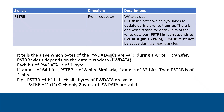The PSTRB signal is also generated from the requester. It gets active during write transfers only, not during read transfers. PSTRB indicates which byte lanes to update during a write transfer — it tells the slave which bytes of the write data are valid. The PSTRB signal width depends on the write data width: for every 8 bits of write data, there is 1 bit of PSTRB. So if data is 64-bit, PSTRB is 8-bit; if data is 32-bit, PSTRB is 4-bit.